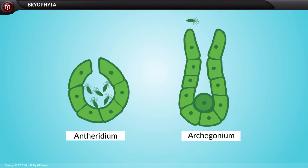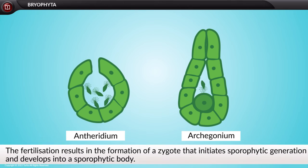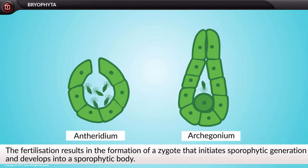During fertilization, the antherozoid is released into the water and reaches the archegonium by swimming, entering the venter to fertilize the egg. The fertilization results in the formation of a zygote that initiates the sporophytic generation and develops into a sporophytic body.